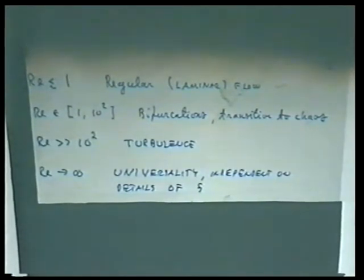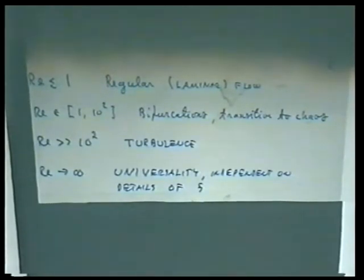In the limit of very large Reynolds number — 10^6 or 10^7, which is actually easy to achieve in air or water under regular circumstances — one observes universality in the sense of Thomas Spencer's talk. Namely, certain things become independent of the nature of the forcing. You can change the details of the forcing and observe the same phenomena, the same numbers.